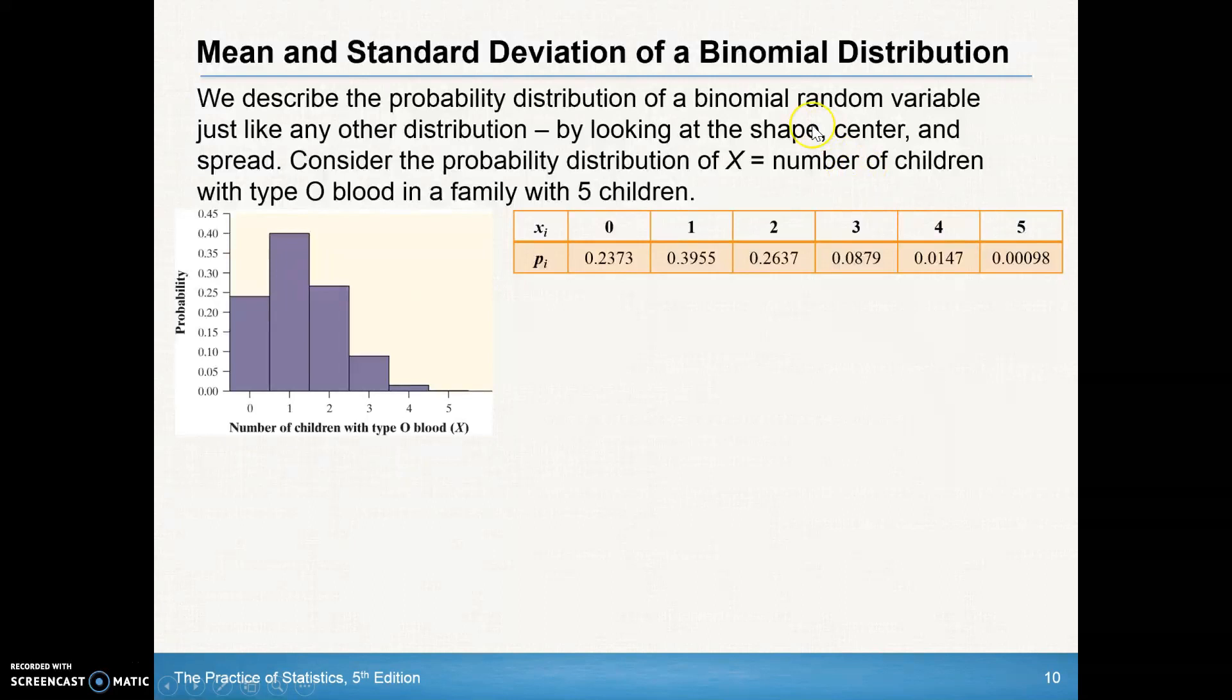To find the mean, you simply take the individual x times its probability plus its individual x times its probability, etc., until you get them all added up.